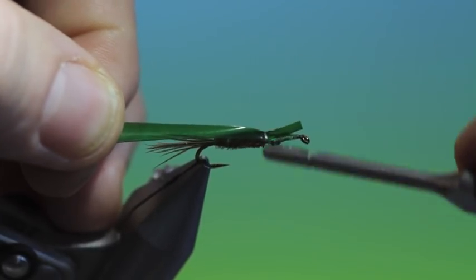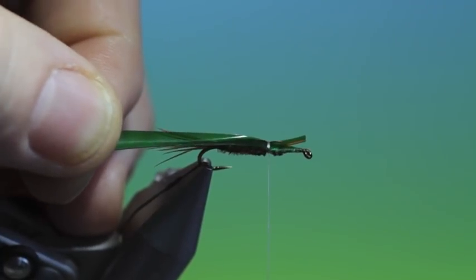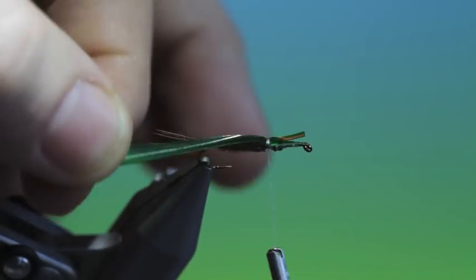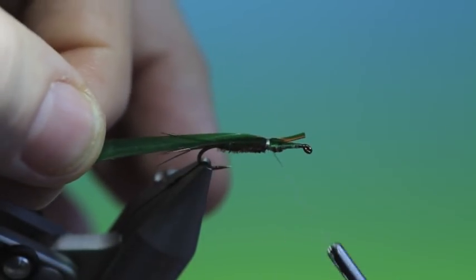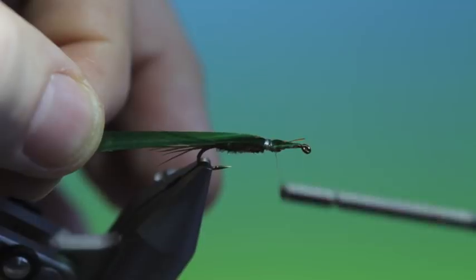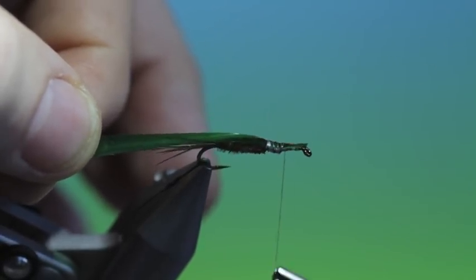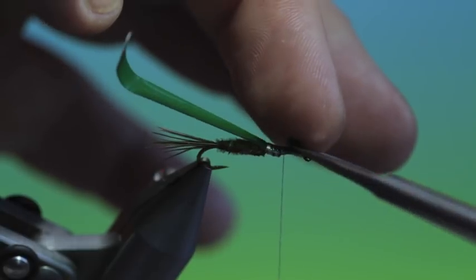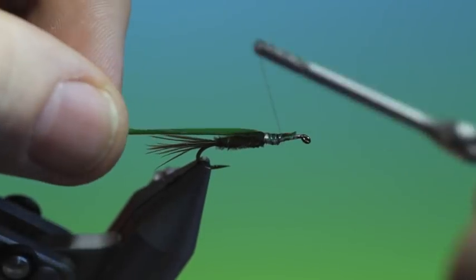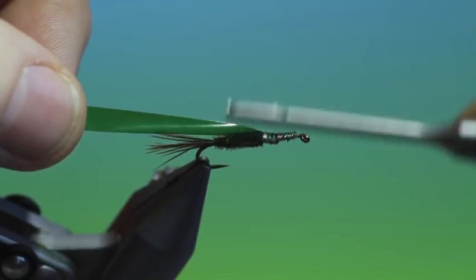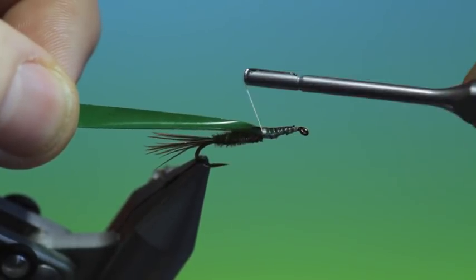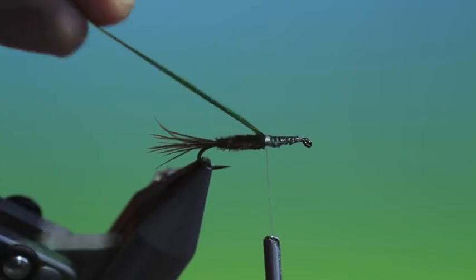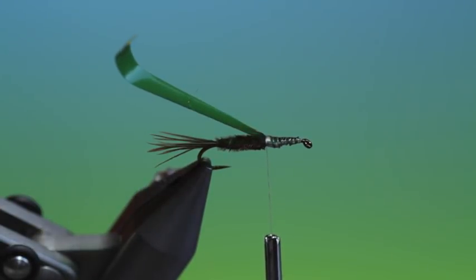So we'll tie just a strip of this nymph flexi body tight into the body of the stonefly. And then we'll take this forward. We can cut a bit of that off. I've tied that in a bit too far forward. That'll do it. And we'll just tie that down and go back up into the body. Like so. Excellent.